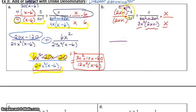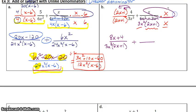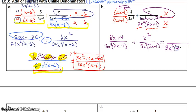In this situation I'm distributing that 4. I get 8x plus 4 on top of the left fraction. Now my denominator is going to be 3x cubed times 2x plus 1. For the right fraction, x times x is x squared. I again have 3x cubed times 2x plus 1 on bottom. Once you have the same denominator, I'm going to just rewrite the denominator: 3x cubed times 2x plus 1.